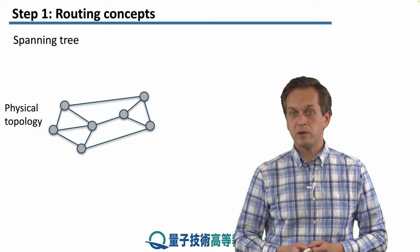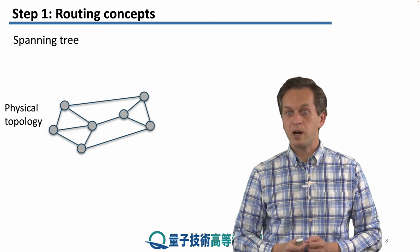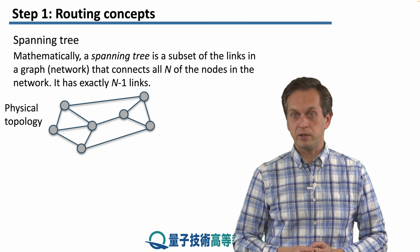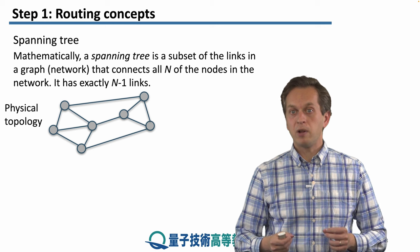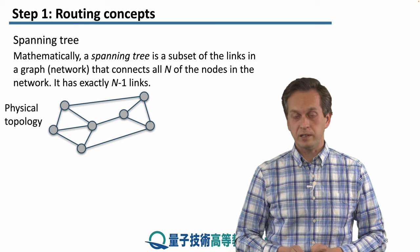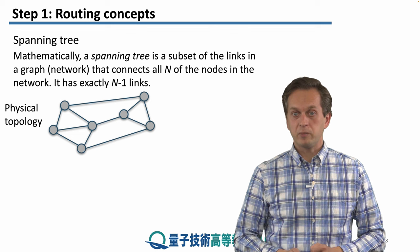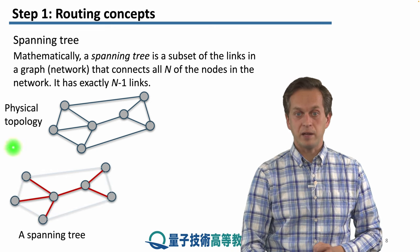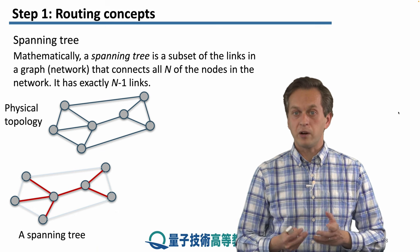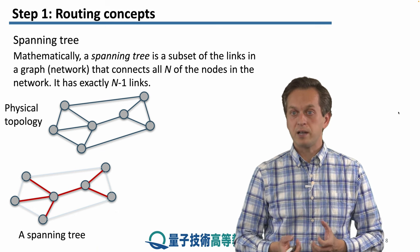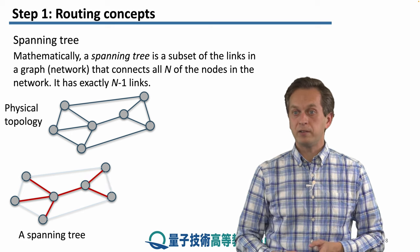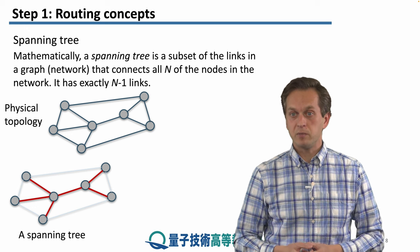A spanning tree is a very important concept that we are going to encounter over and over again. And it's defined as a subset of links in a graph or a network that connects all n nodes in the network. And it has exactly n-1 links. For our example network, this is a valid spanning tree. You can see that all the vertices, all the nodes are connected to the spanning tree. There are no isolated ones. And we can also count the number of links to find out that there's six, which is 7-1.